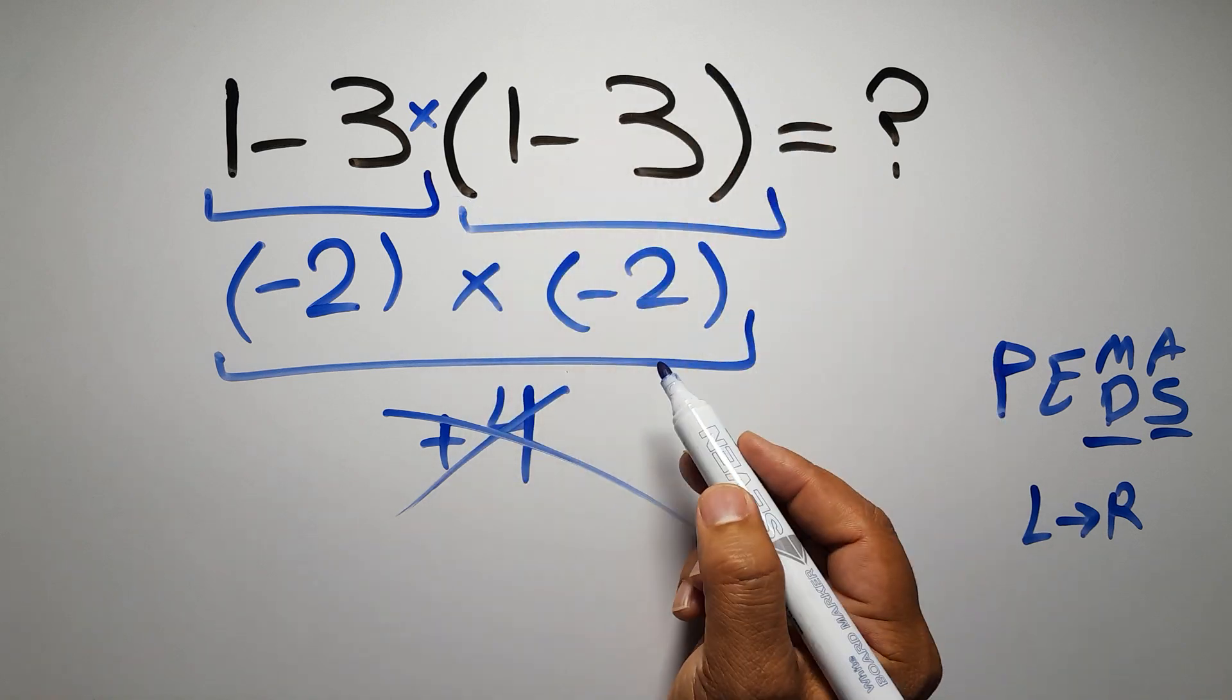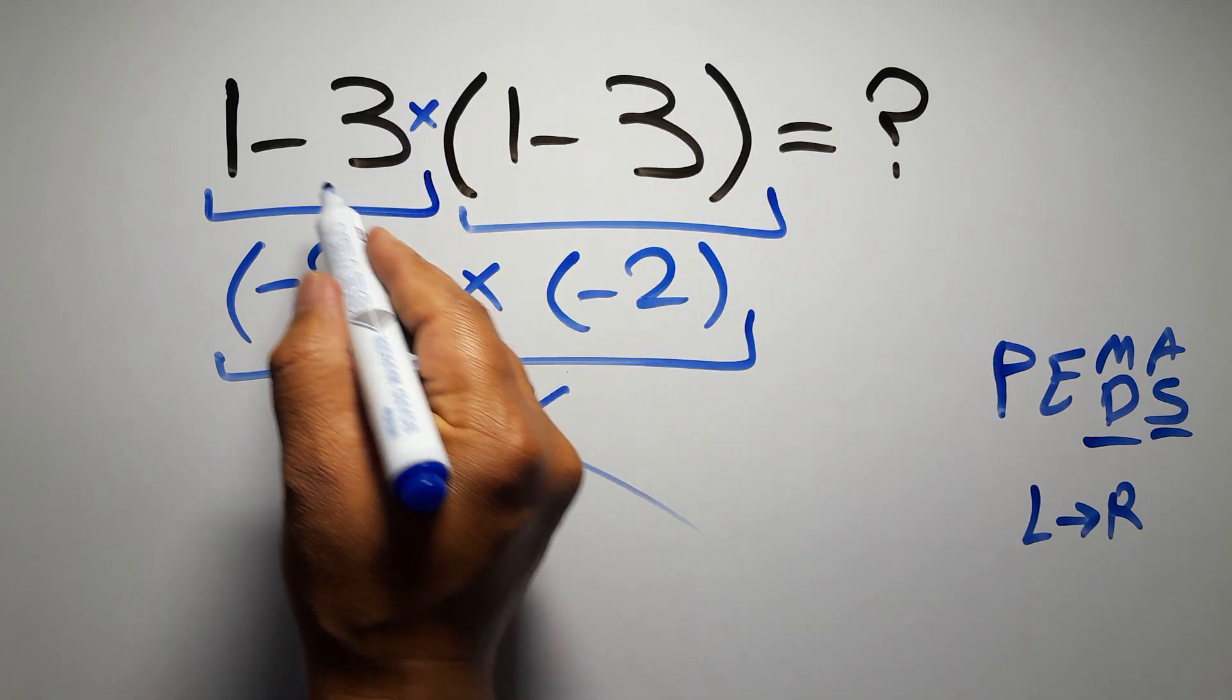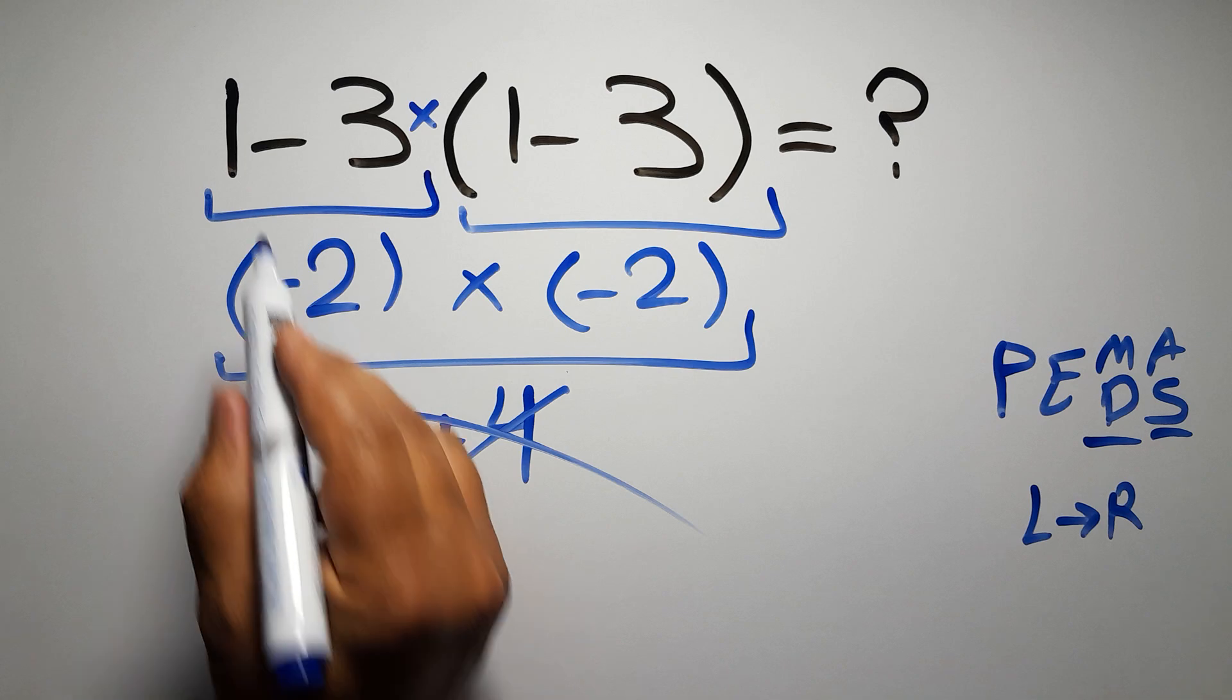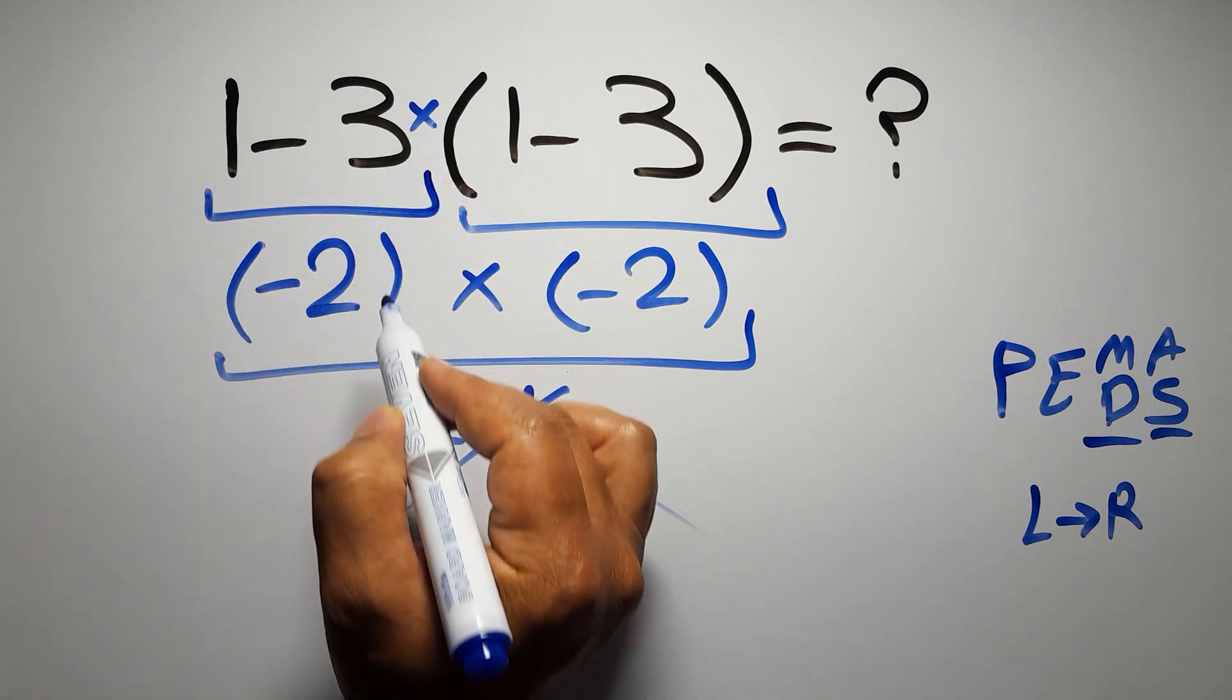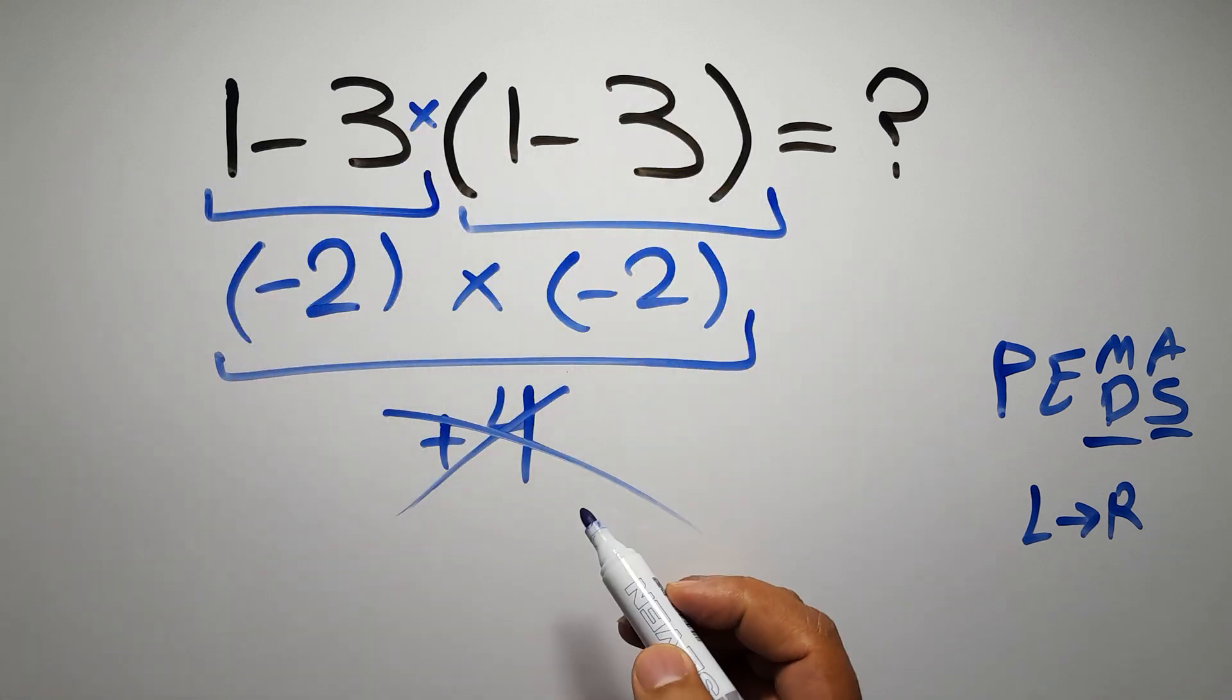So according to PEMDAS, first we have to do these parentheses, then this multiplication, and finally this subtraction. If we do this subtraction before this multiplication or this parentheses, it is wrong.